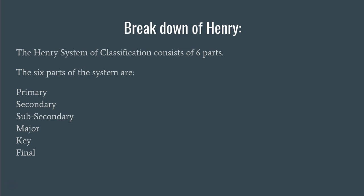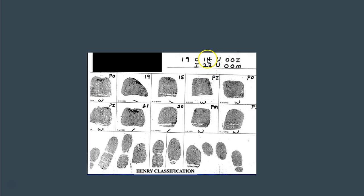The Henry system, as we mentioned in the first video, consists of six parts: the primary, the secondary, the sub-secondary, the major, the key, and the final. When we look at a Henry, we see that it's found in the top right-hand part of the fingerprint box. The primary, which is the very first thing we do, is listed in the third spot.